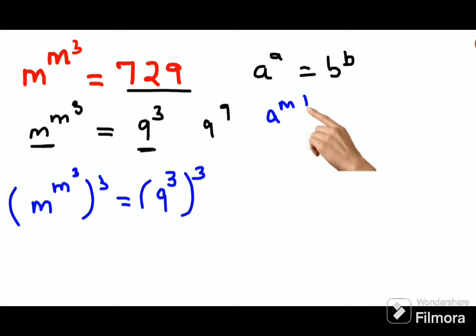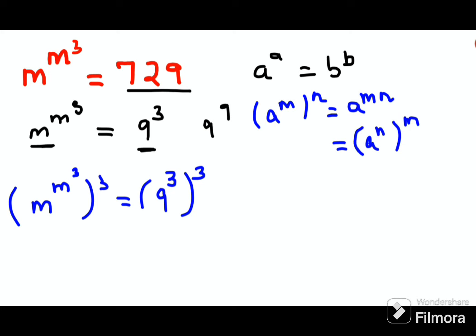a raised to m, the whole raised to n, can become a raised to m into n, or it also can be written as a raised to n into m. Correct? So what I can do over here is...